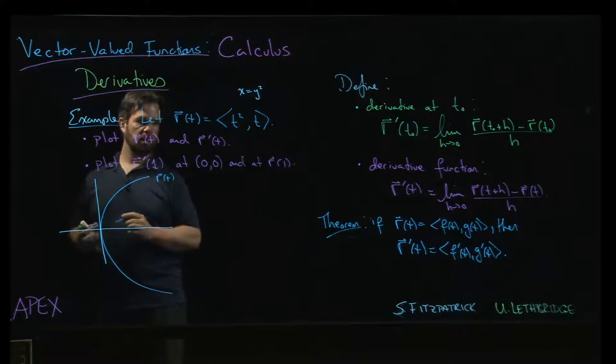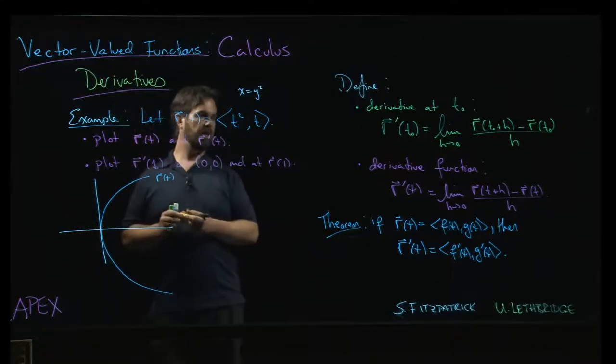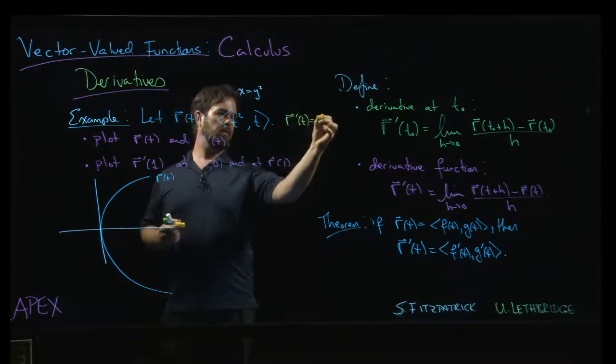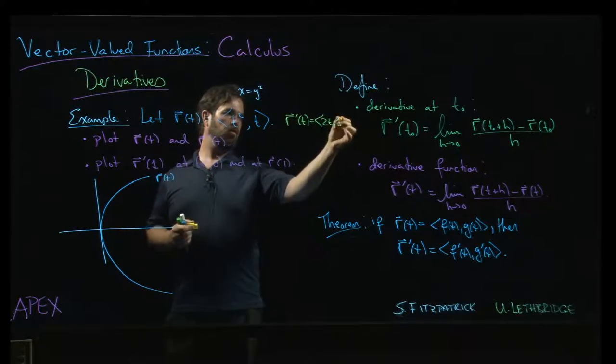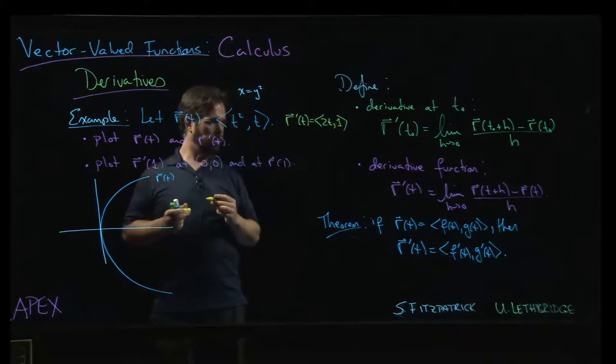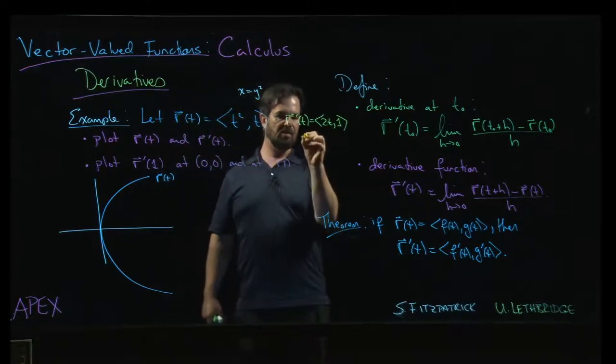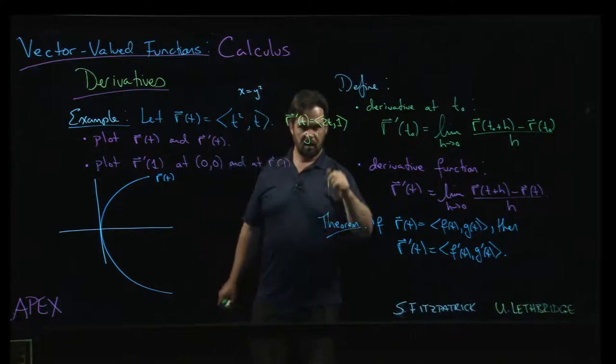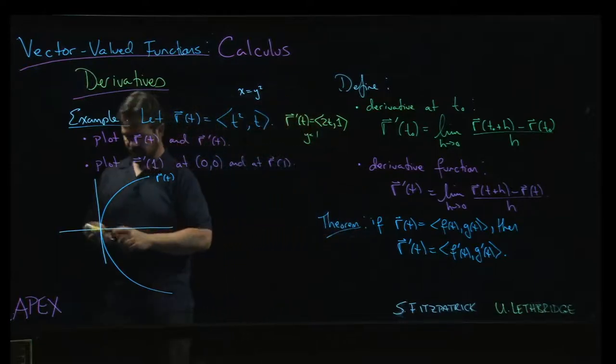Here's r of t. Now if I go ahead and calculate r prime of t, well that's going to be 2t and 1. What this is, is just actually a line, right? y equals 1 - the y value is constant, the x value varies, and we just get a line traced out from left to right.